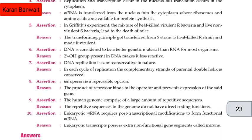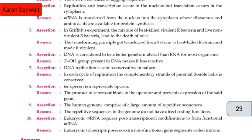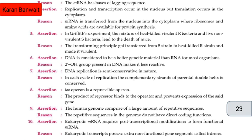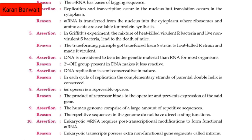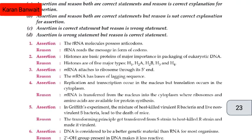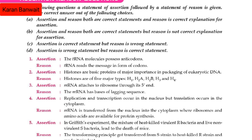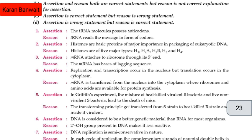Sixth assertion: DNA is considered to be better genetic material than RNA for most organisms. Reason: the 2-OH groups present in DNA make it less reactive. The right option will be A — assertion and reason both are correct, and reason is the correct explanation for assertion.